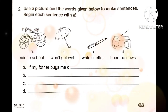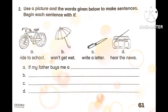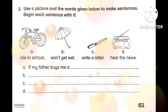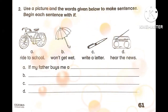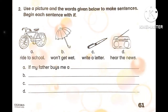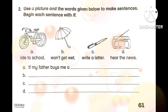Question number two: use the pictures and the words given below to make sentences. Begin each sentence with 'if.' We have pictures: first, a bicycle; second, an umbrella; and a radio. The words given are: bicycle, ride to school, umbrella, won't get wet, pen, write a letter, and radio, hear the news.